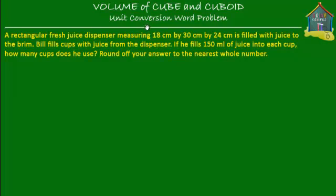Welcome to homecampus.com.sg. Let's solve this word problem on volume. A rectangular fresh juice dispenser measuring 18 centimeters by 30 centimeters by 24 centimeters is filled with juice to the brim. To the brim means to the top — it's fully, completely filled with fresh juice.